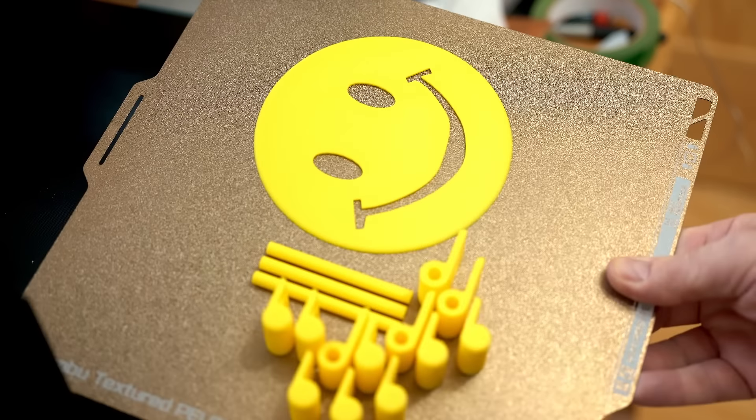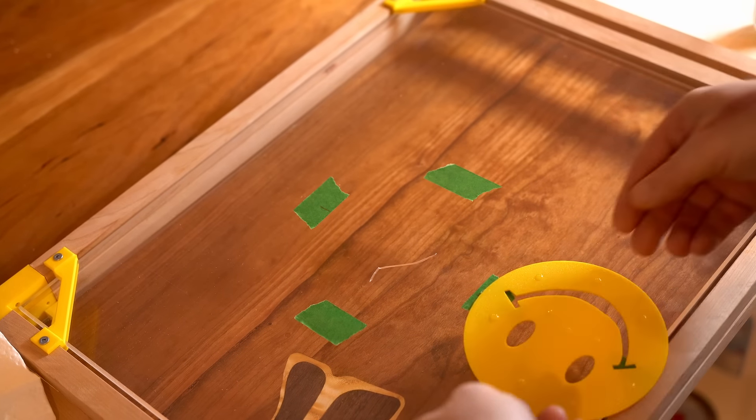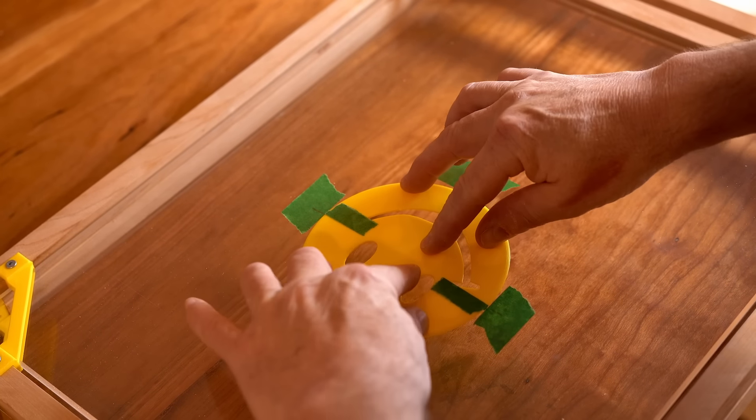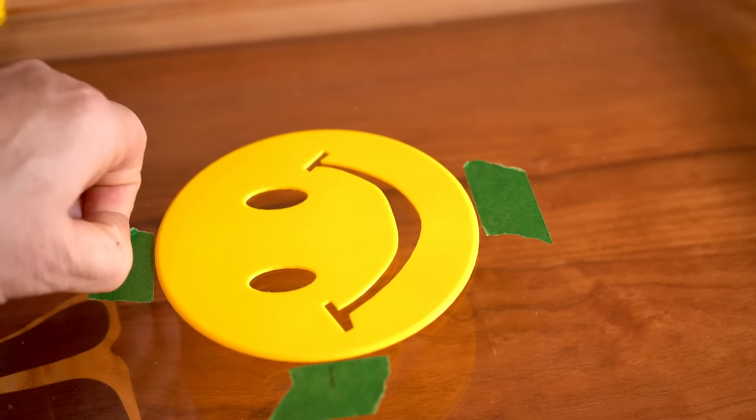So back to the printer again. You can see what I made to cover that scratch on the front panel. Mr. Happy. And some spots of super glue will hold him in place. And he hides that scratch nicely.